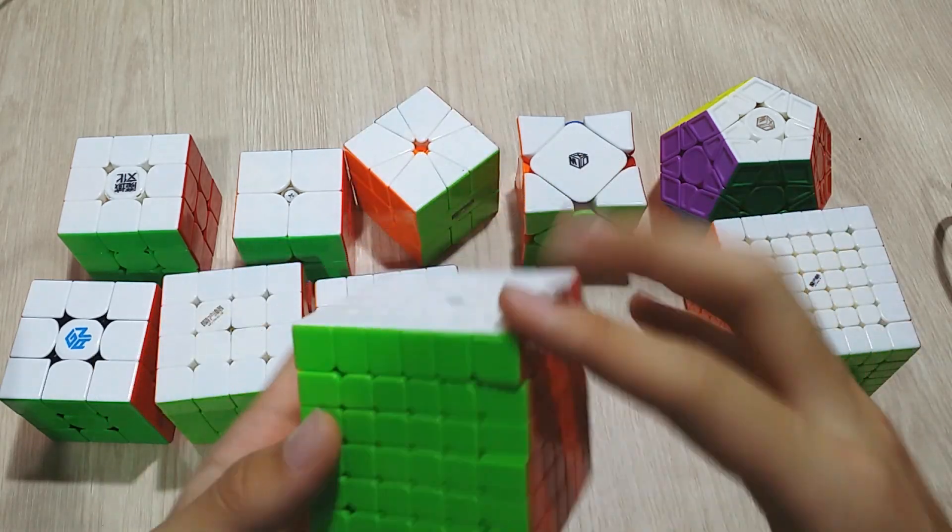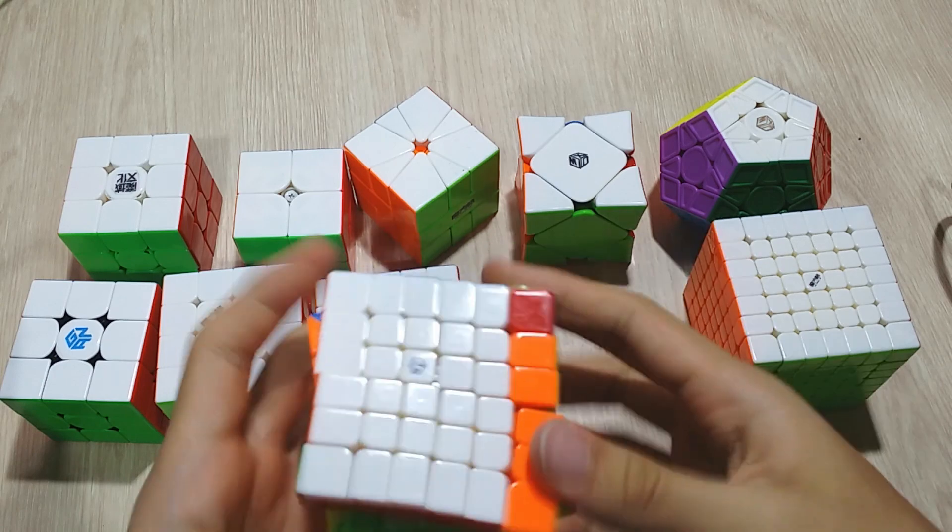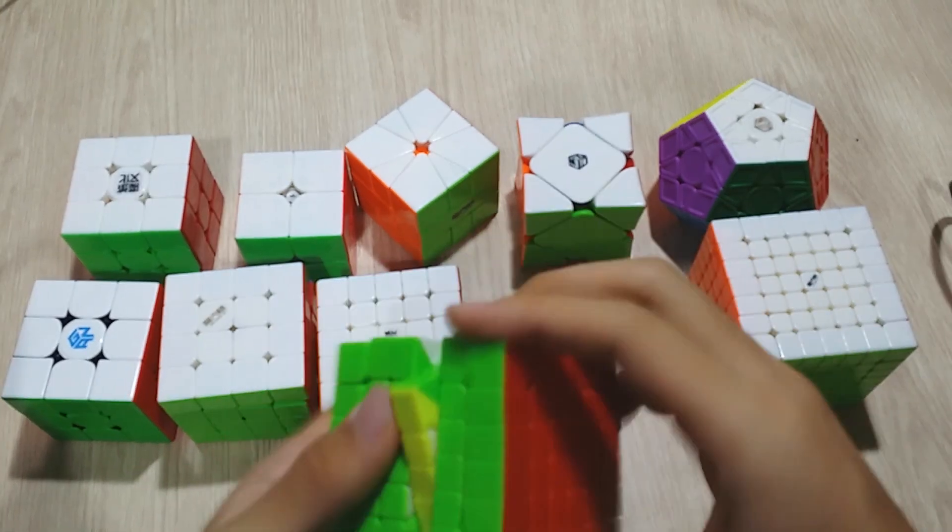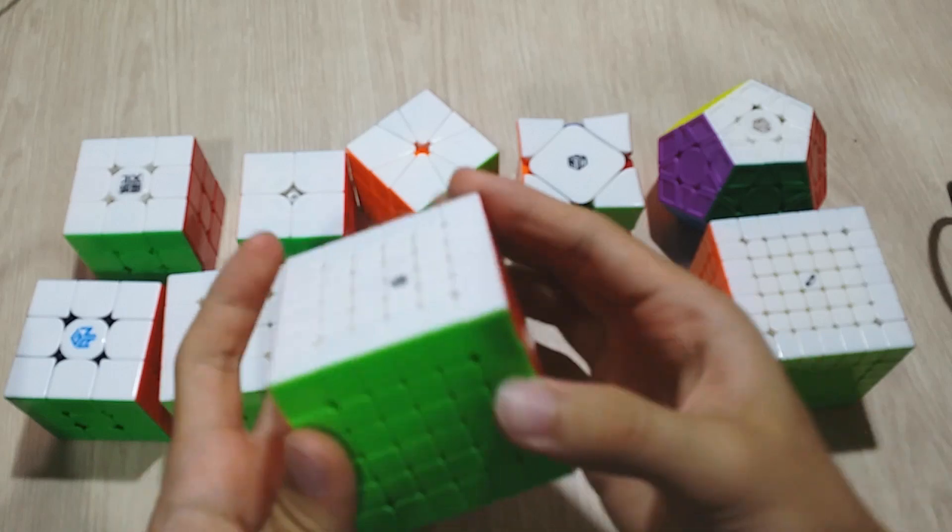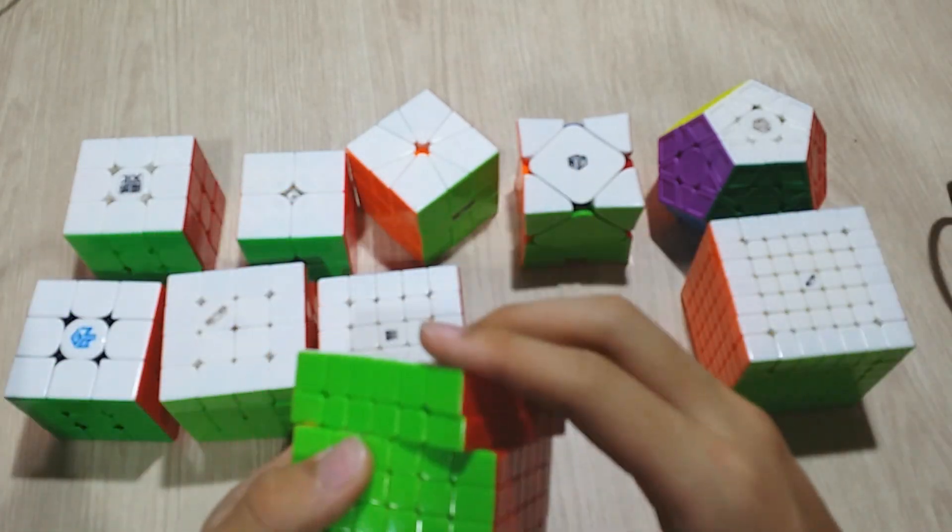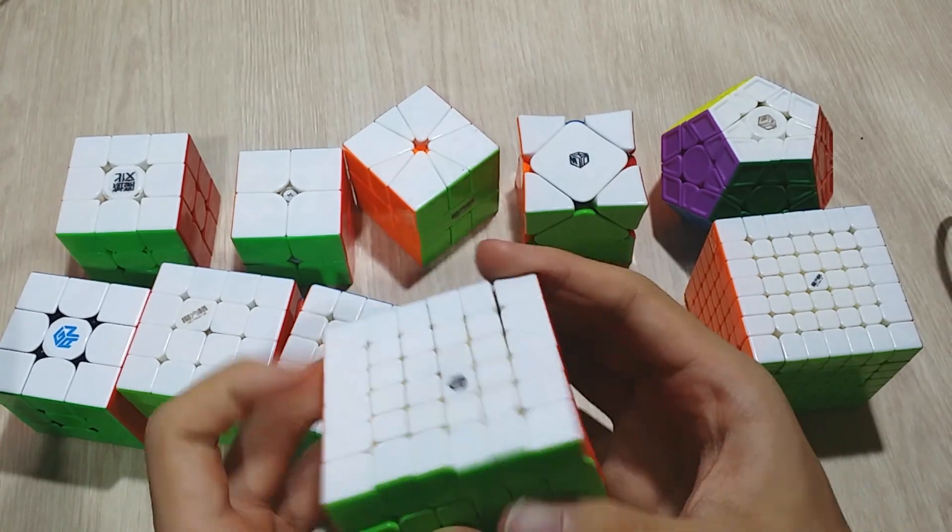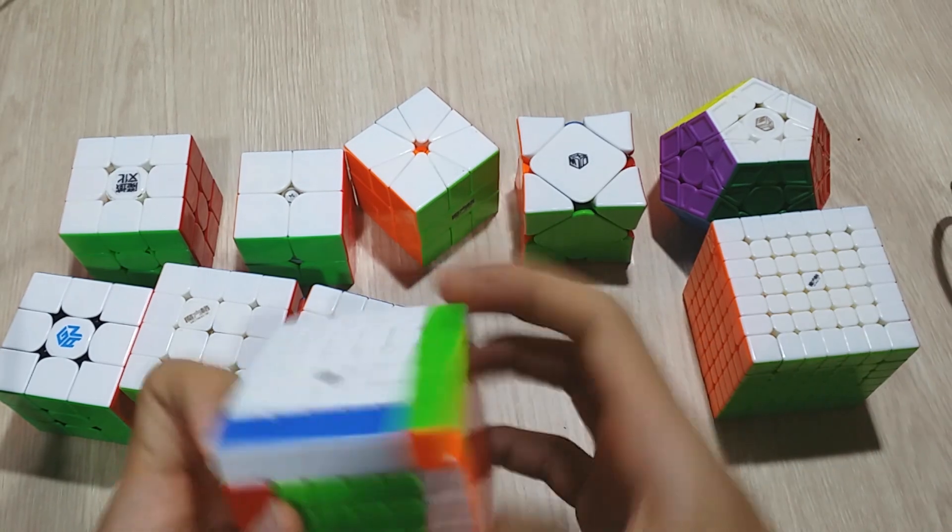For 6x6, I use the X-Man Shadow. Now this cube is very fast. I'm not really into 6x6 anymore. I used to be sub-4, but now I'm like sub-4:10 because I don't really practice it anymore.